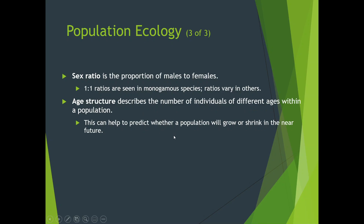The sex ratio — the proportion of male to female — is typically one-to-one in monogamous species, though ratios vary in others. Age structure describes the number of individuals in different age groups within a population, and this can help predict whether a population will grow or shrink in the near future.